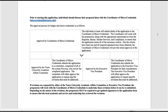Once the coordinator signs off on your application, it gets submitted both to the Toro University System Academic Affairs Committee as well as the Executive Vice President. These two bodies review the proposal independent of each other, and either body may ask the individual to make changes to or add specific items to their proposal before it gets approved. Depending upon how significant these revisions are, individuals may be required to get updated signatures and to work with the coordinator of micro-credentials to address these particular revisions.